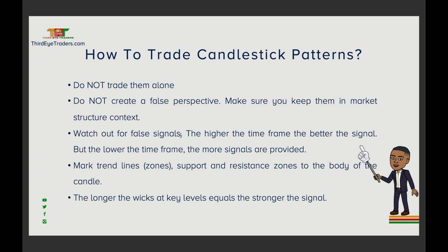The longer the wicks at key levels, the stronger the signal. When you see a long wick — like the pin bars we showed you — you know that's price action rejecting that certain key level. When we see those, especially on a higher time frame, that gives us a bias that the market is about to overturn in the opposite direction.